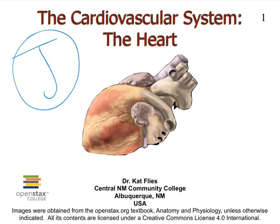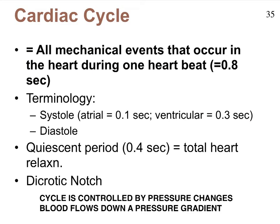Hi, this is Dr. Kat Fleece. In video J, we're going to focus on the mechanical phases of heart contraction, collectively referred to as the cardiac cycle. A cardiac cycle includes all of the physical or mechanical events that occur in one heartbeat. Considering that on average we have about 70 to 75 beats per minute, one heartbeat is going to last just a tad bit less than a second — so on average about 0.8 seconds.